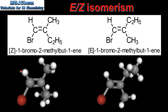Here we can see 3D models of both isomers. On the left we have the Z isomer, on the right we have the E isomer. In the Z isomer the bromine atom and the C2H5 group are on the same side of the double bond. In the E isomer the bromine atom and the C2H5 group are on opposite sides of the double bond.